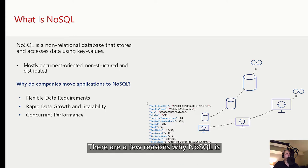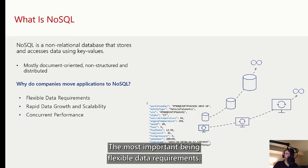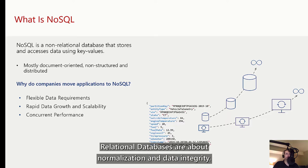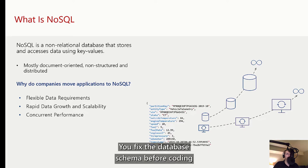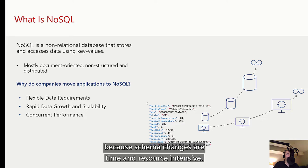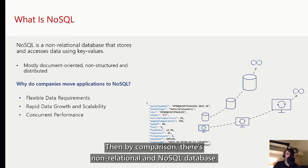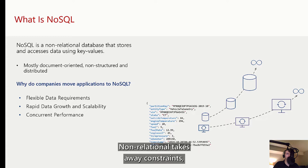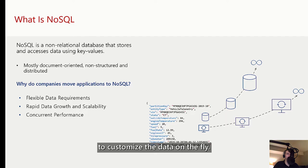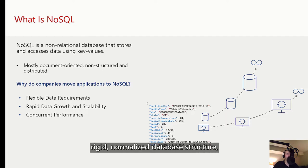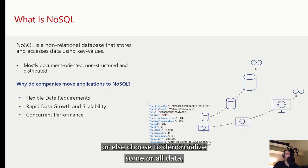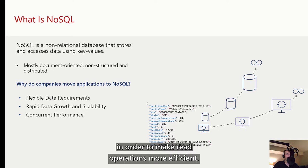There are a few reasons why NoSQL is taking off now as a database model, the most important being the flexible data requirements. Relational databases are about normalization and data integrity — you fix the database schema before coding because schema changes are time and resource intensive. By comparison, non-relational or NoSQL databases take away those constraints, giving your application the flexibility to customize the data on the fly. The application may choose to keep a rigid normalized structure or denormalize some or all data to make read operations more efficient.